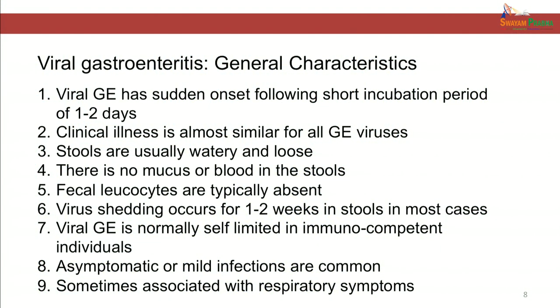Let us first see what are the general characteristics of viral diarrhea. Viral gastroenteritis has sudden onset which follows a short incubation period of 1 to 2 days. The clinical illness is similar for all viruses causing gastroenteritis. Stools are usually watery and loose. There is no mucus or blood in the stool. Fecal leukocytes are typically absent. Virus shedding occurs for 1 to 2 weeks in stool. Viral gastroenteritis is usually self-limited in immunocompetent persons. Sometimes asymptomatic or mild infections also occur and viral gastroenteritis is also associated with respiratory symptoms.